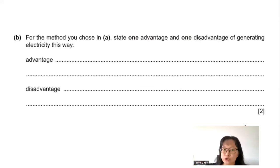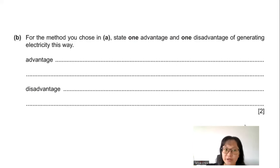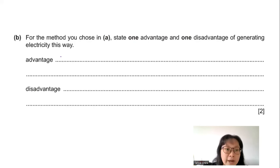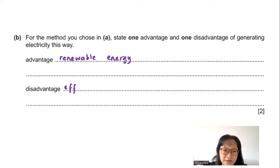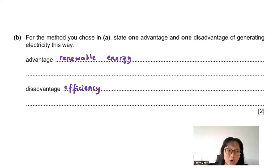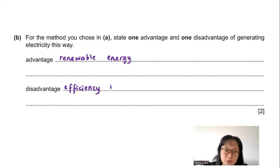Part B: State one advantage and one disadvantage of this method. The advantage is that water is a renewable energy source — it will never run out. The disadvantage is that the efficiency or electrical power output generated by this method is still relatively low.